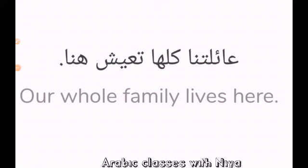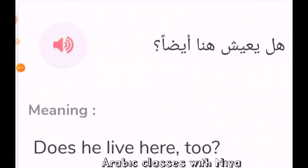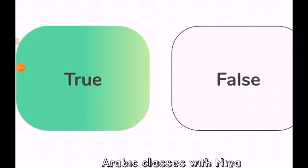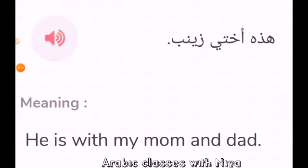Our whole family lives here. True or false: does he live here too? That is right — it is true. Next sentence: hadhihi ukhti Zainab means 'He is with my mom and dad' — true or false? That is wrong, because hadhihi ukhti Zainab means 'This is my sister Zainab.'